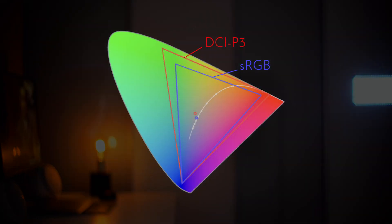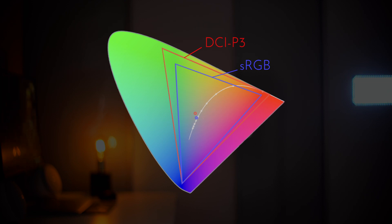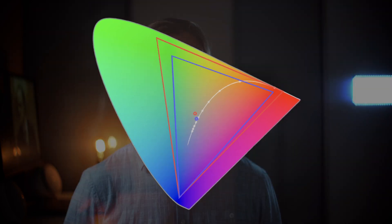In the middle of each of these triangles you can see two dots — this is called a white point, and it's what the color space considers to be white. The sRGB color space — which is pretty much the same as Rec. 709 online — has its white point slightly shifted towards the magenta spectrum. This is why our skin tones, for example, end up looking a bit more reddish when we upload them and view in Chrome.